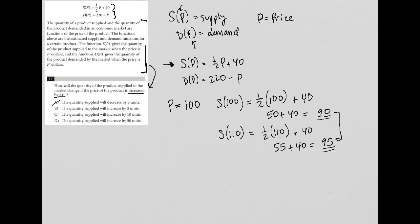Answer choice B says the quantity supplied will increase by 5 units. I definitely like that. Looking at the others, one says 10 units, one says 50 units. So that's not good. My answer here will be choice B.